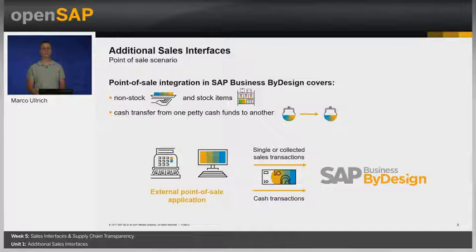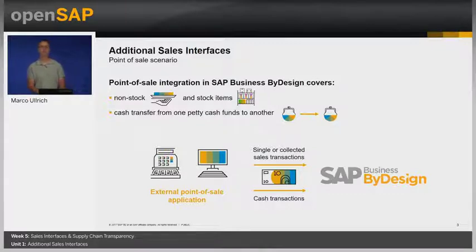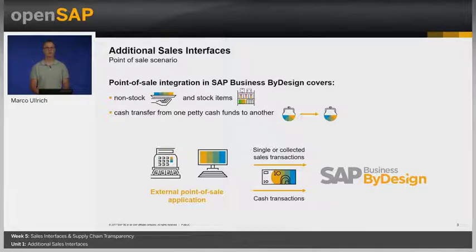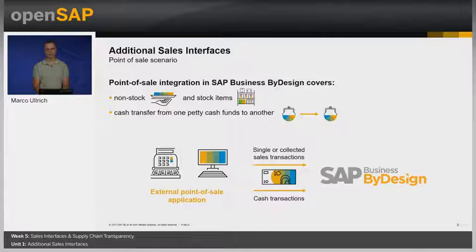For preparation and setup, point-of-sales needs to be selected in the business configuration as a customer invoicing option. Together with this, some master data are necessary, like accounts, petty cash, clearing account, revenue account, projects, and payment terms, which are the base for non-stock items. Additional material master and logistics area are required for stock items. Ideally, you have a master data integration in place for this.